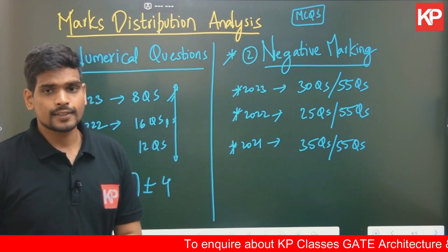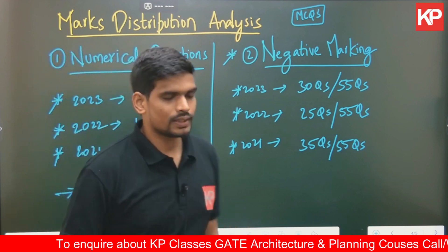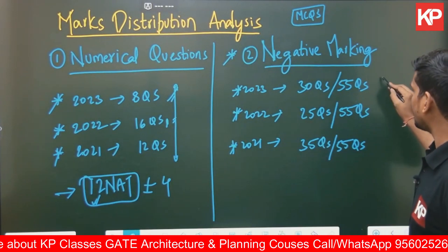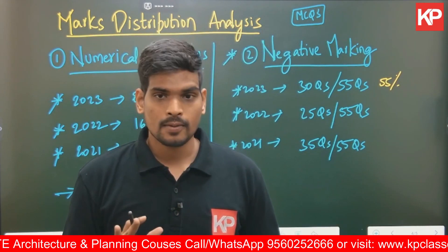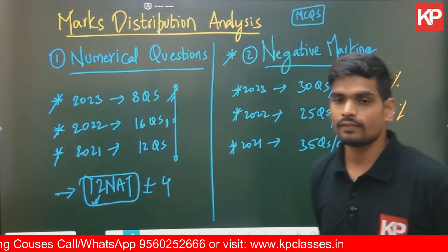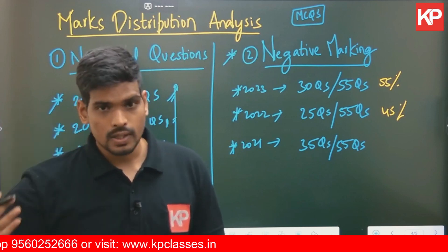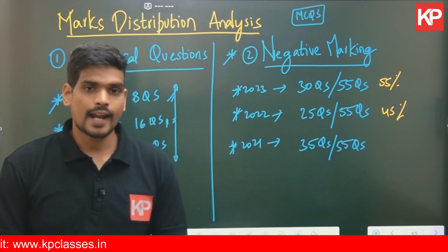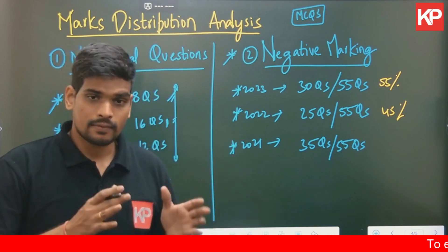As far as negative marking is concerned, on average approximately 50 percent — slightly lower or slightly more — of questions can be negative-marking-based. In 2023, approximately 55 percent of core subject questions are MCQ with negative marking, and the remaining 45 percent have no negative marking. In 2022 it was approximately 45 percent. In 2021 there were a huge number — more than 60 percent, approximately 65 percent, of the questions had negative marking. So there is no clear trend.